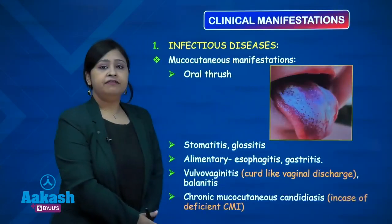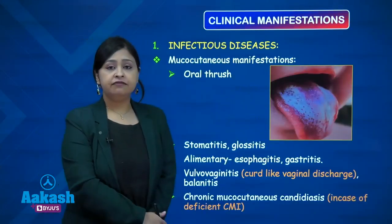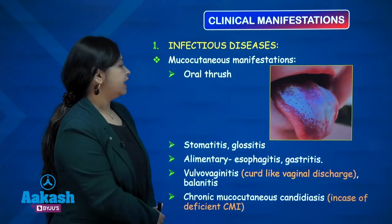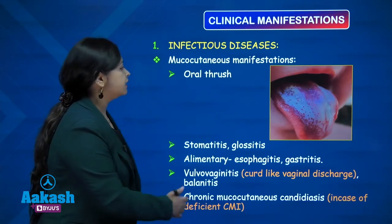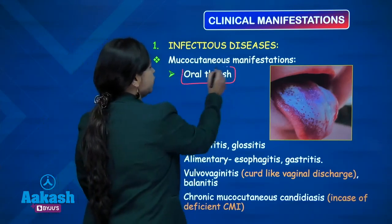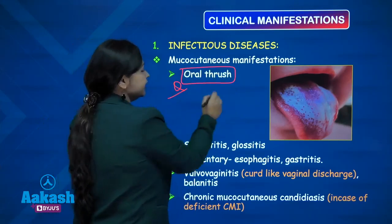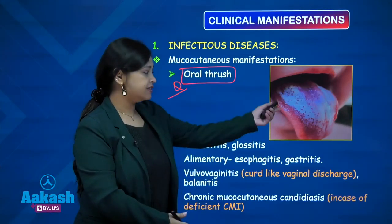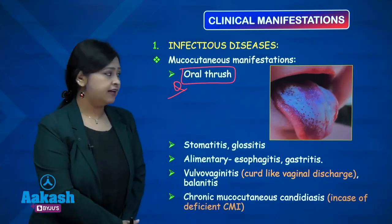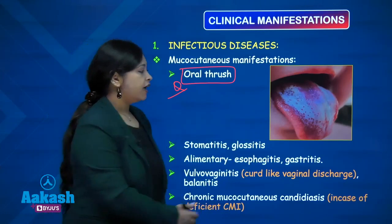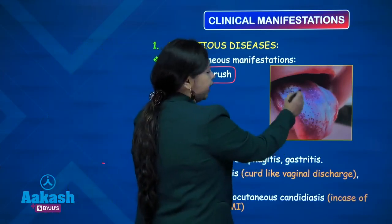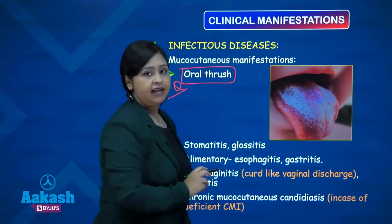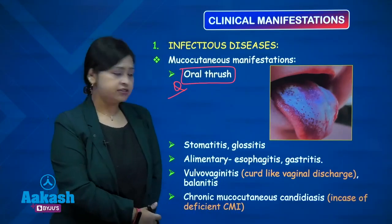Coming to the clinical manifestations, there are two types: infectious diseases and allergic diseases caused by Candida. The most common infectious manifestations are mucocutaneous infections and oral thrush. This is a clinical entity frequently asked as an image-based question in exams, showing the white curdy patch on the tongue which is a case of oral candidiasis, and it is common in HIV positive patients.